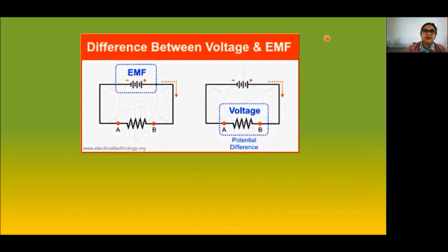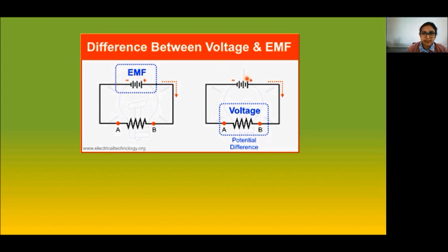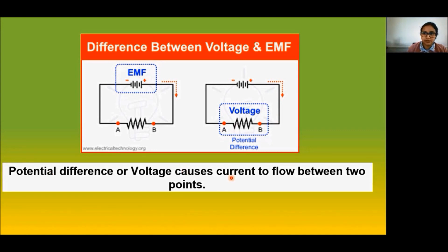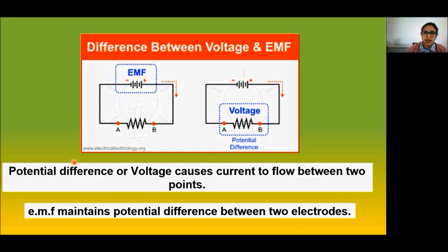The difference in potential may be produced by a battery consisting of one or more cells. The chemical action within the cell generates the potential difference across the terminals of the cell. When the cell is connected to a conducting circuit, the potential difference sets the charges in motion within the conductor and electric current is produced. Potential difference or voltage causes the current to flow between two points, and EMF maintains the potential difference between the two terminals.